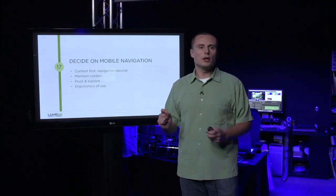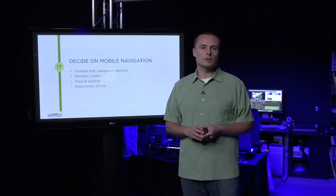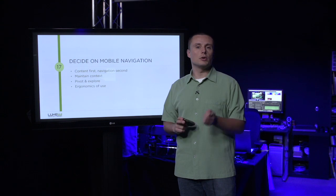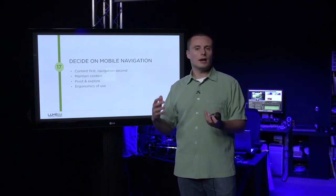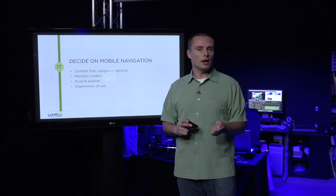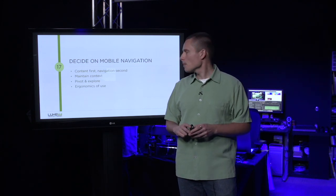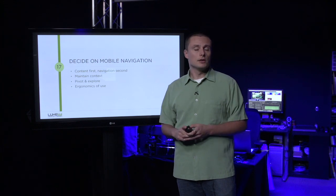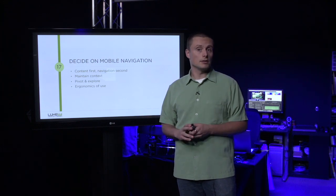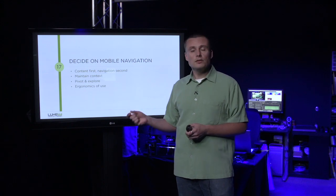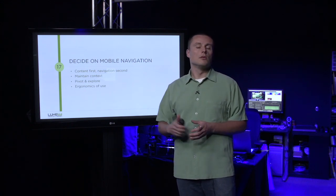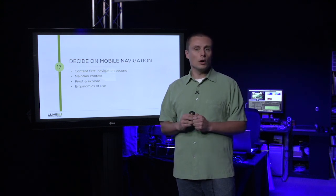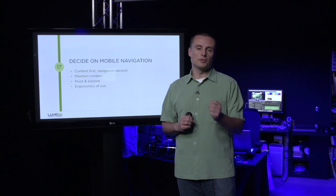In walking through these examples, we've seen a number of different ways to evaluate mobile navigation solutions. Do they start with content and provide minimal access to nav when it's necessary? Do they allow you to maintain context and come back to where you left off without getting lost in a maze of menus? Do they allow you to pivot and explore when you get to the end of content so you can find things you may not have been looking for? And last but not least, do they take into account how people actually hold and use mobile devices in their daily lives? Navigation systems that do all those things tend to work much better and create a more fluid, fast, and easy experience for your users.